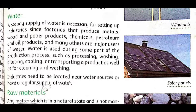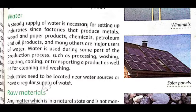The next source is water. A steady supply of water is necessary for setting up industries. Factories that produce metals, wood and paper products, chemicals, petroleum and oil products, and many others rely on water as a basic requirement.